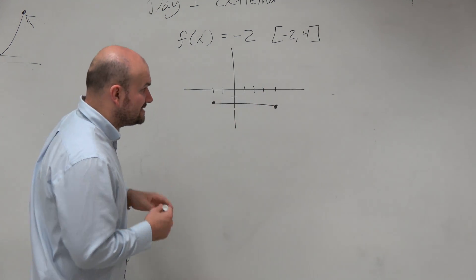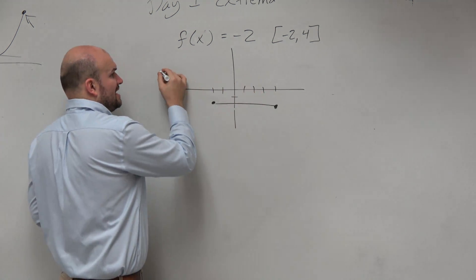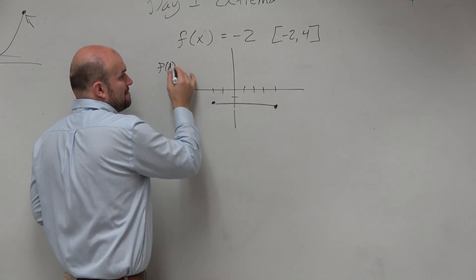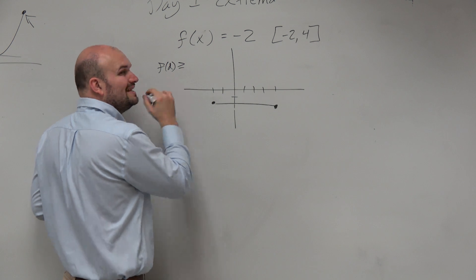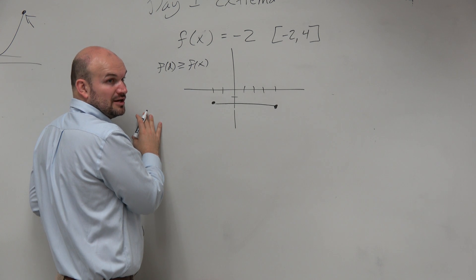Now, to kind of make sense, or at least for the answer, I remember what I wrote when I was talking about the max. I think I said like f of d. f of d is a max when it's greater than or equal to f of x on your closed interval or on your interval.